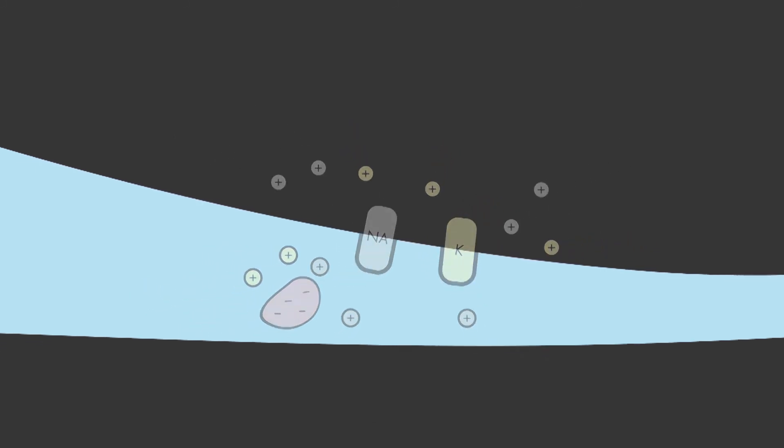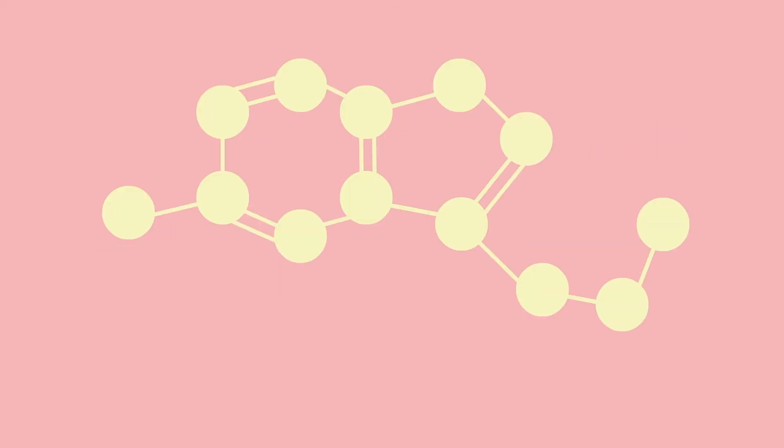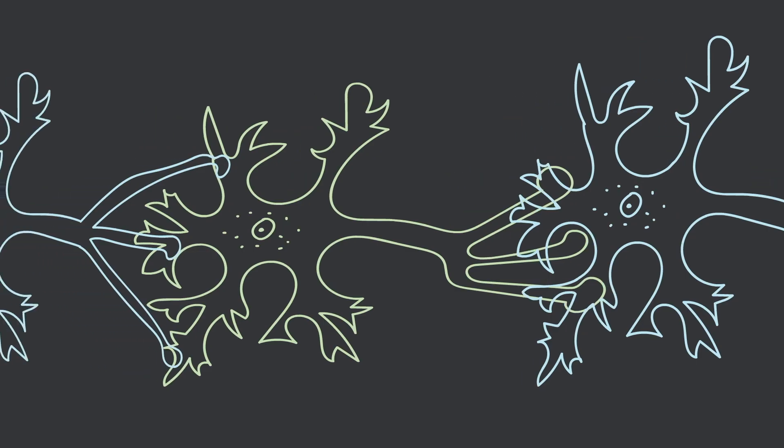One individual neuron influences thousands of others, and thousands of neurons can influence one. This is the brain in action.